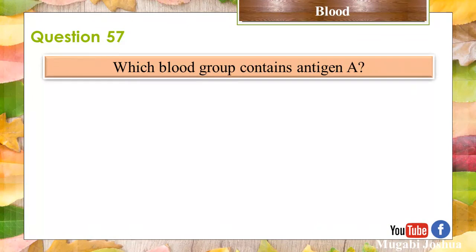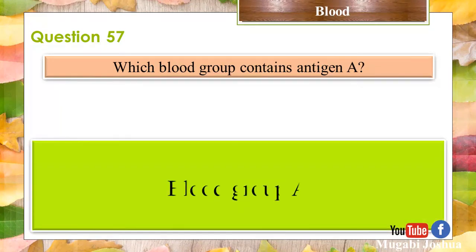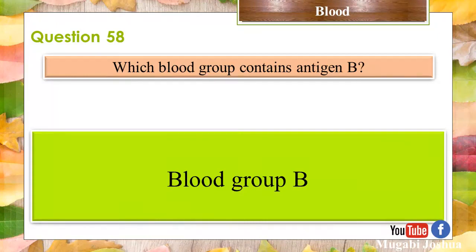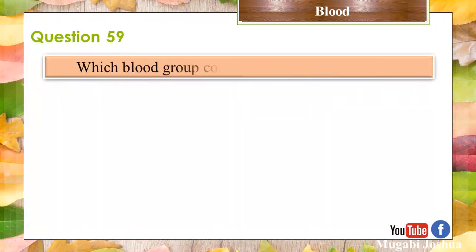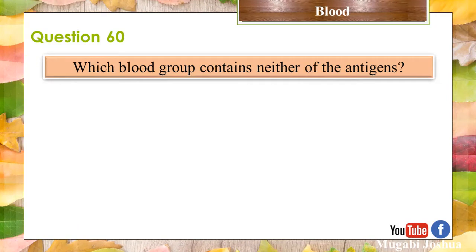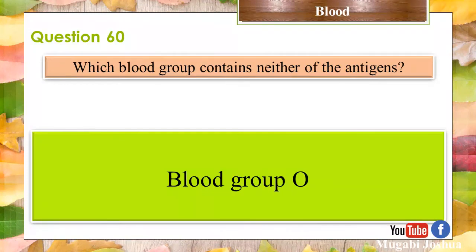Question 57: Which blood group contains Antigen A? Blood group A. Question 58: Which blood group contains Antigen B? Blood group B. Question 59: Which blood group contains both Antigen A and B? Blood group AB. Question 60: Which blood group contains neither of the antigens? Blood group O.